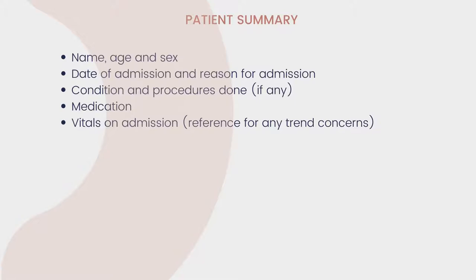With the patient summary, you will give the name, age, and sex of the patient — the basic details. Then the date of admission, the reason they were admitted, the condition the patient may have or may have had, and any procedures that were done, such as surgeries. You'd also include what medication they're on or have been given, and their vitals on admission, which you'll use as a reference.